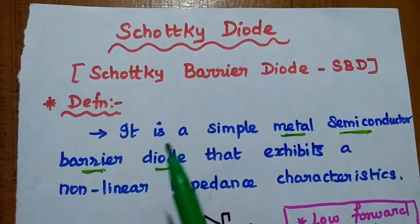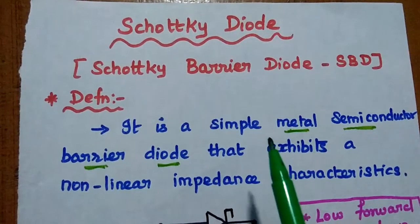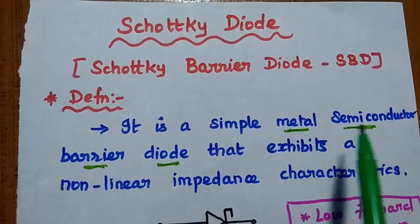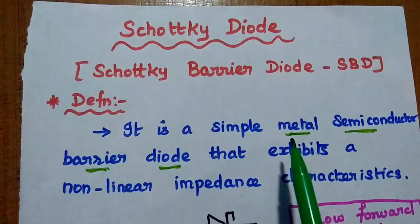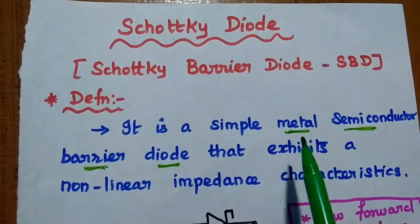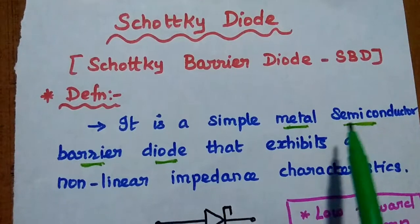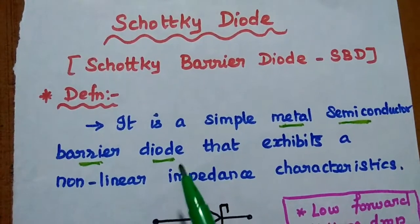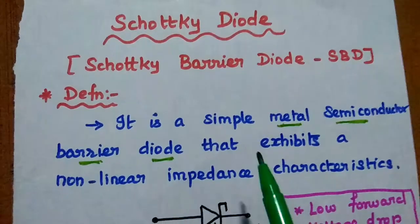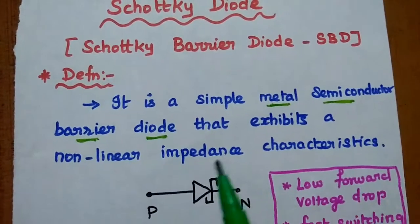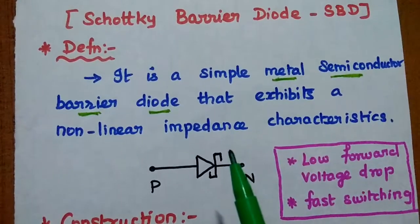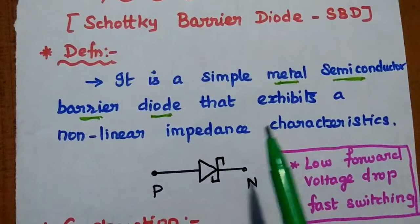It is a very simple diode which is formed by the junction of semiconductor with metal. That's why it is called as metal-semiconductor barrier diode. It exhibits a non-linear impedance characteristic like other diodes.